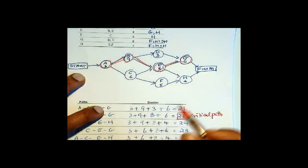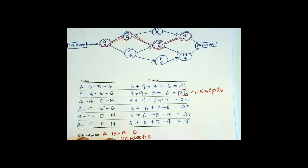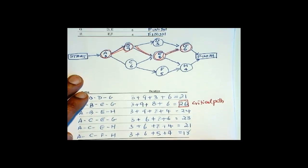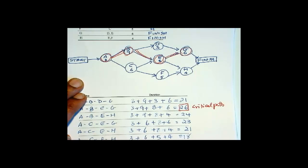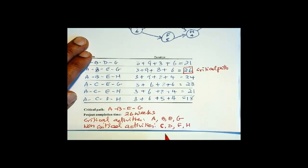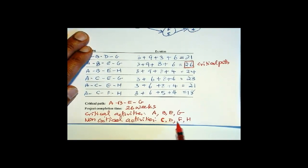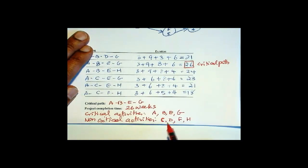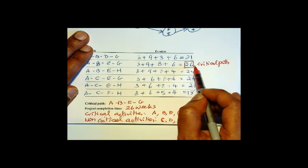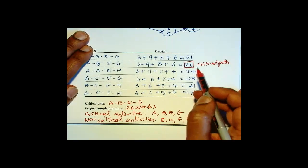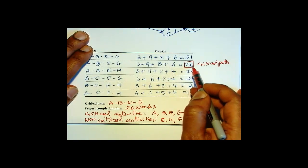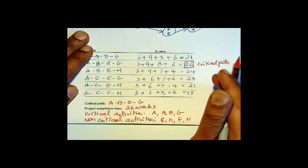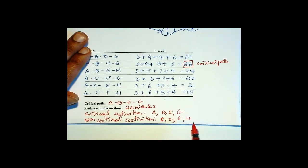So the non-critical activities are C, D, F, and H. Any delay in these activities, as long as the paths do not extend beyond 26, the project completion time will remain at 26 — it will not change. That's the reason why these are non-critical activities: C, D, F, and H.